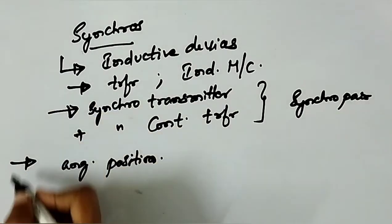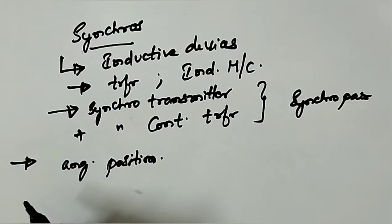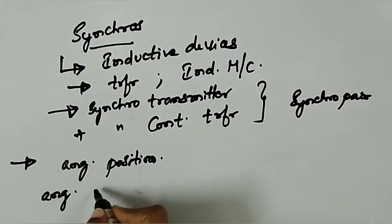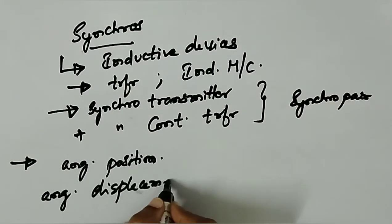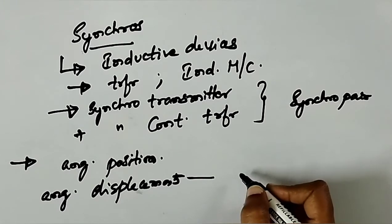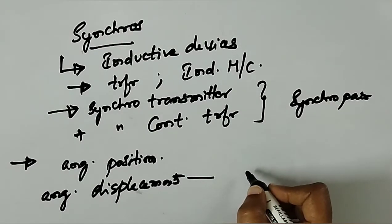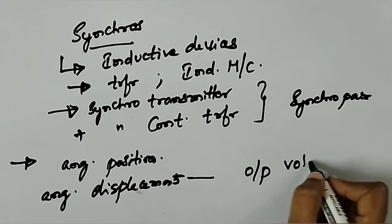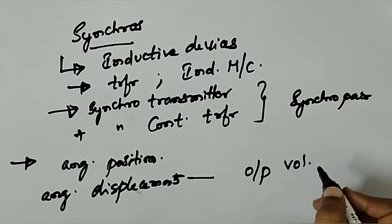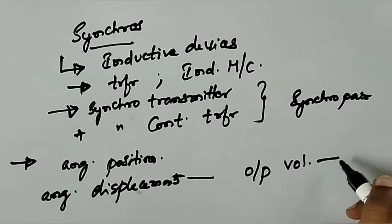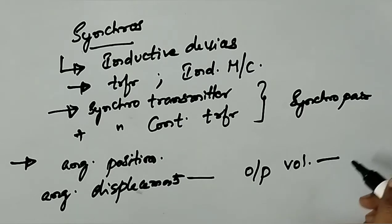This synchro pair would compare two angular displacements, and that particular difference is measured in terms of output voltage - that is, in a linear relationship with the angular difference of the axes of both shafts.